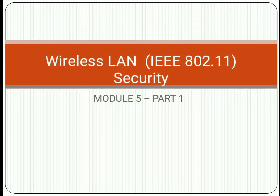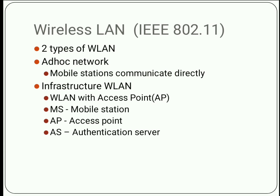Hello, in this video we are going to discuss Module 5 of Principles of Information Security, that is Wireless LAN IEEE 802.11. In this module we will be discussing about various wireless LAN security, wireless LAN vulnerabilities, cell phone security, mobile malware, etc. In this video we are discussing about wireless LAN.